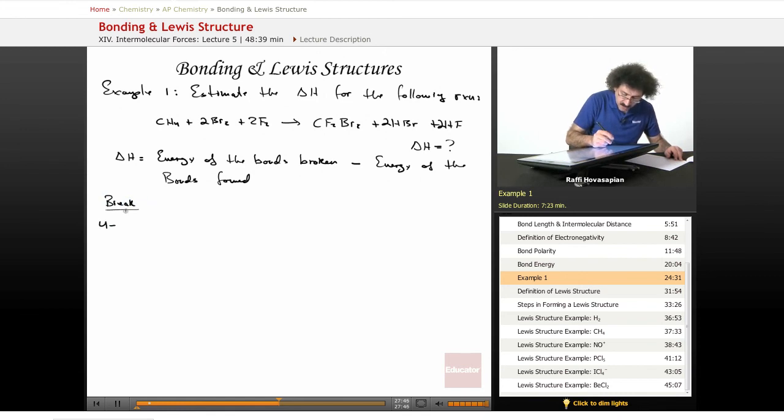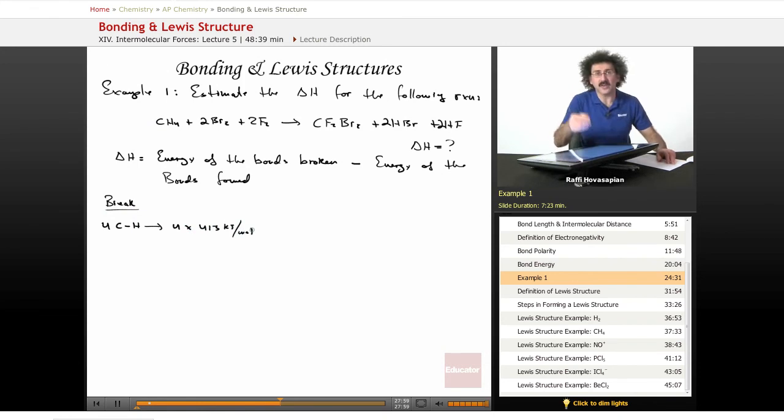We're breaking four CH bonds. Right? CH4. So, four CH bonds. That's going to equal four times 413 kilojoules per mole. And, again, these values for bond energies, they're in your book. Or they're in the back of the book. Or they're in a CRC table. And they're available in a list. Or they're available on the web.